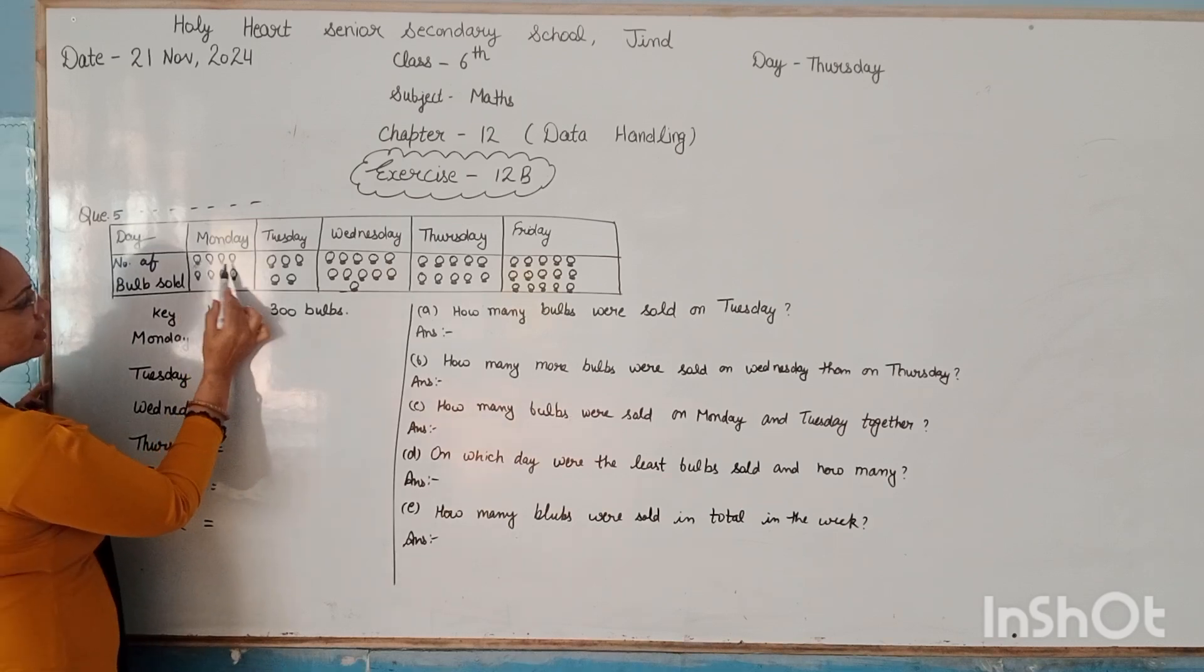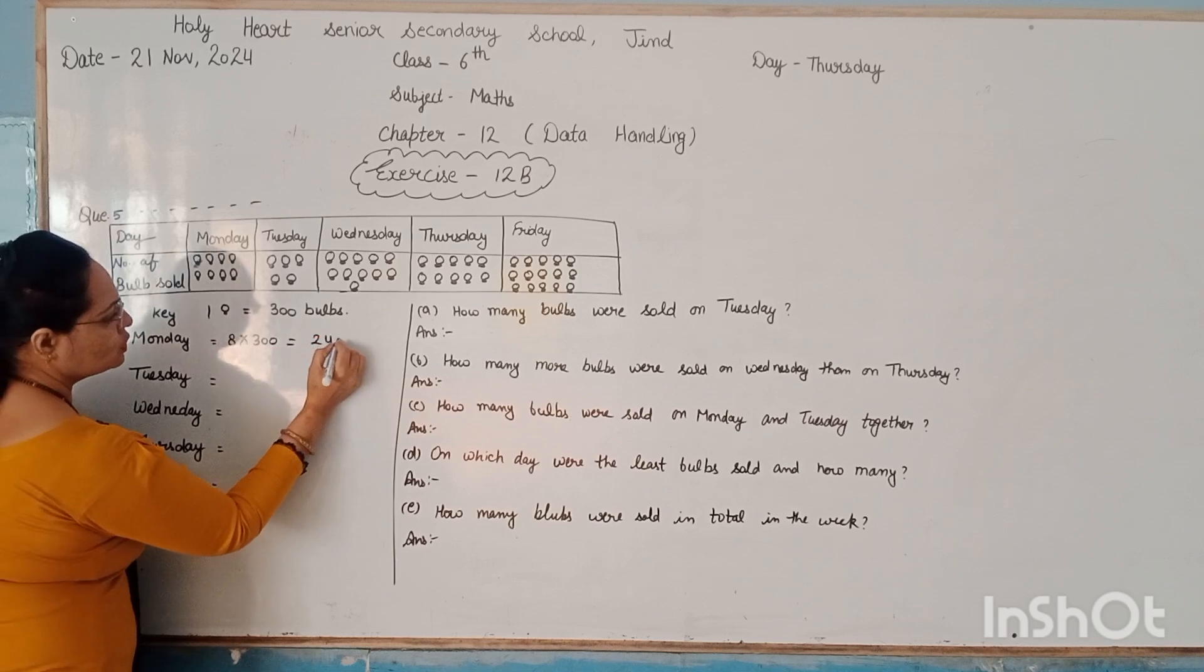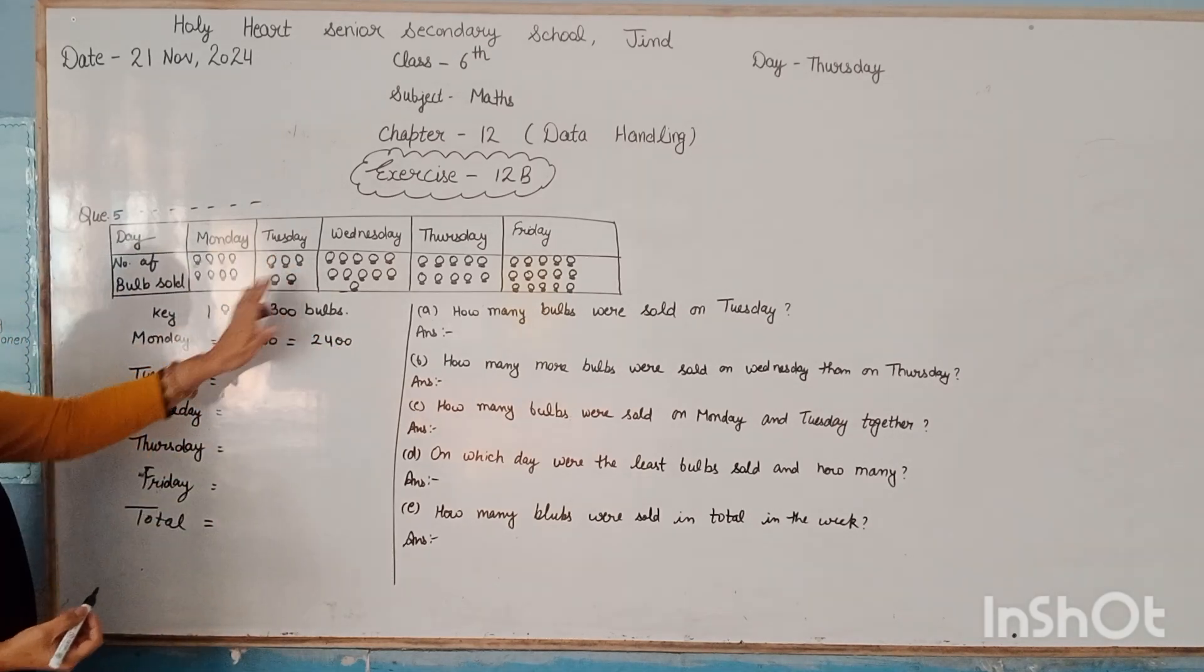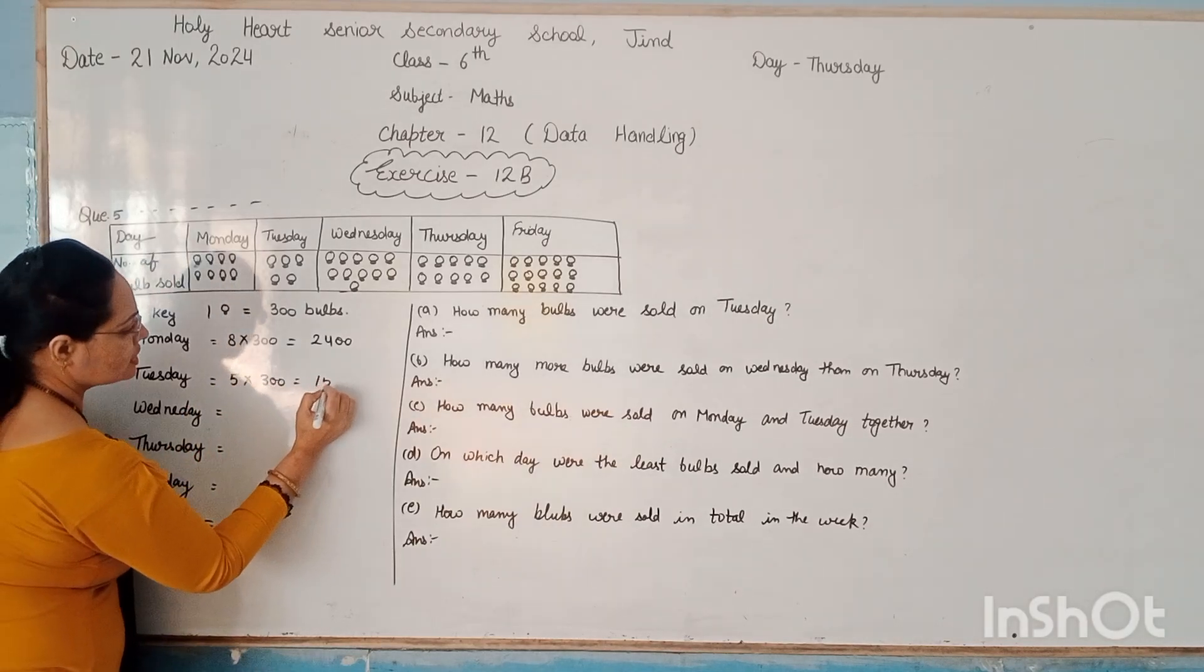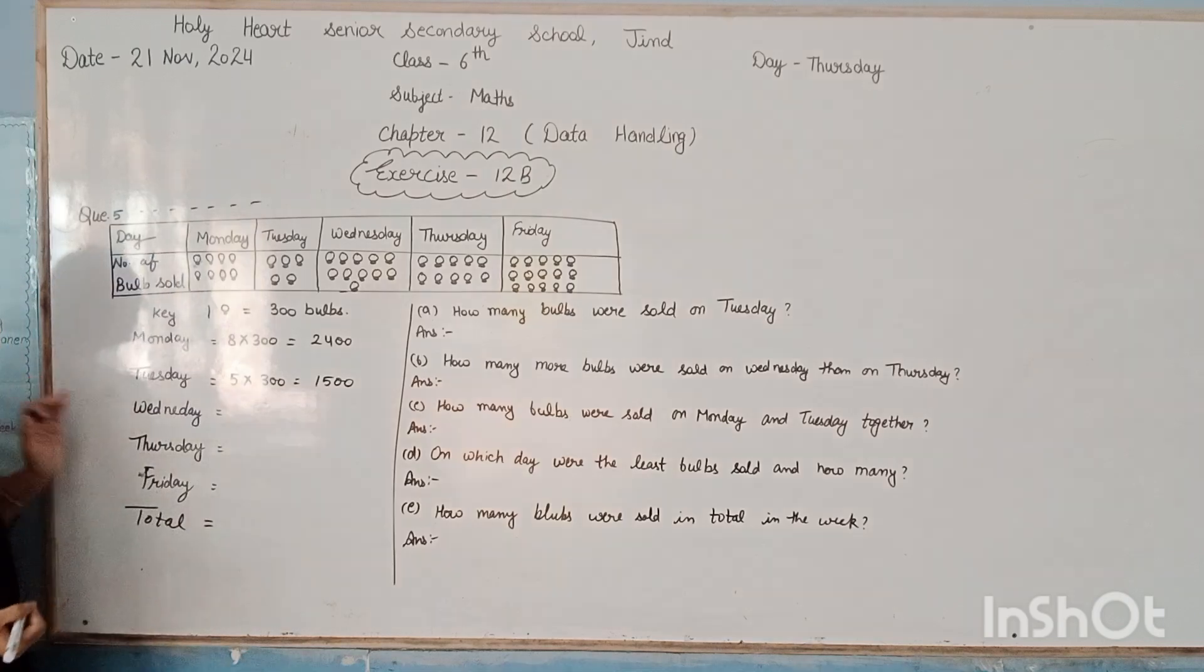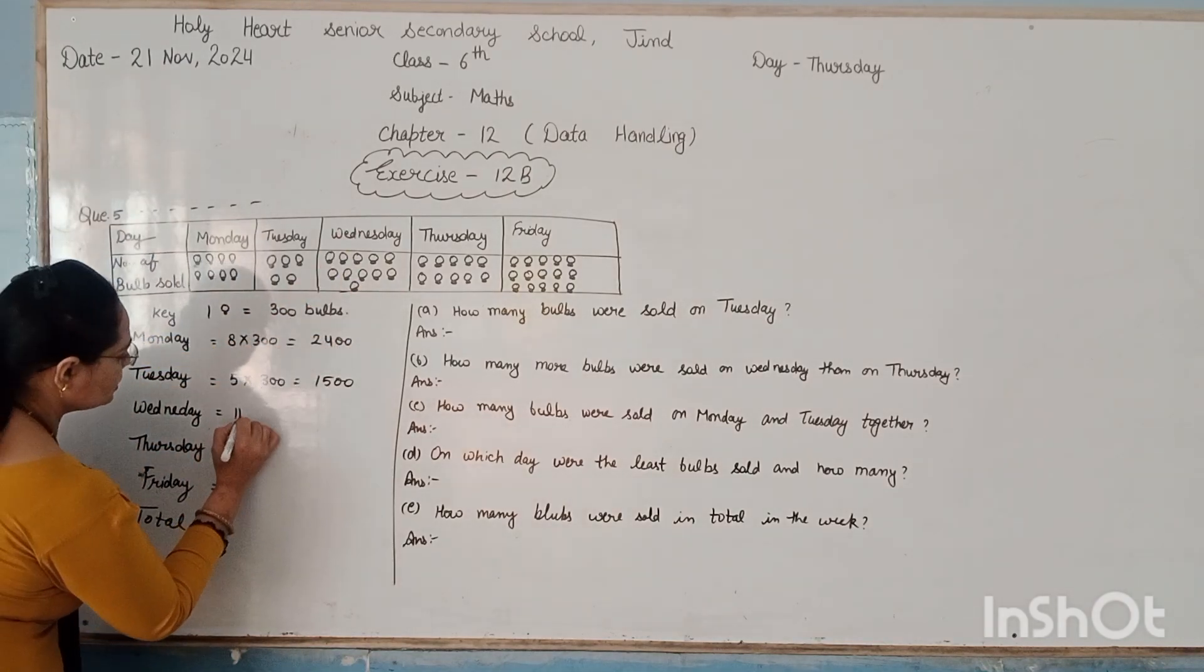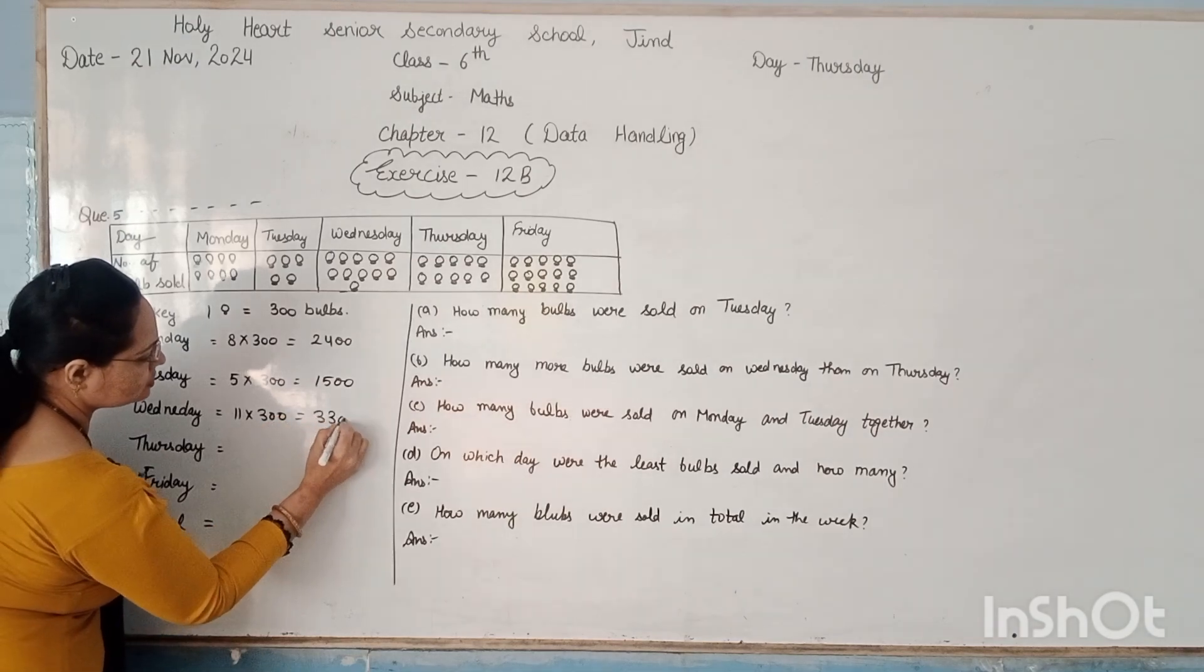So on Monday, how many symbols are here? 8 symbols, and 1 symbol represents 300 bulbs, so 8 times 300 equals 2,400 bulbs. On Tuesday, there are 5 symbols, so we have to multiply 5 by 300, on Tuesday, 1,500 bulbs. On the next day, Wednesday, there are 11 symbols, so 11 multiplied with 300, that is 3,300.